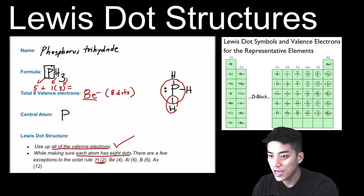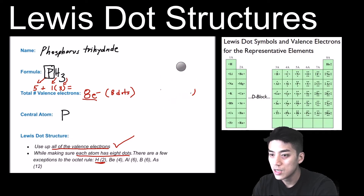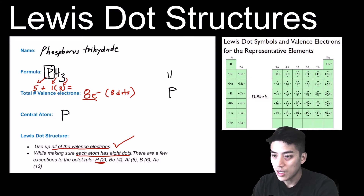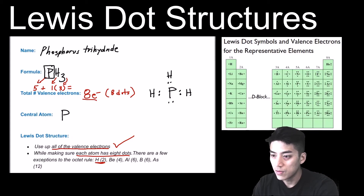Each of the hydrogens has two electrons — and remember, hydrogen is an exception; it does not need eight in the structure, just two. You can draw the structure with the H's in different positions as long as it looks symmetrical. You can use all dots, or you can use lines where electrons are bonded — but the lone pair on phosphorus has to remain as two dots, because it's not bonded to anything.